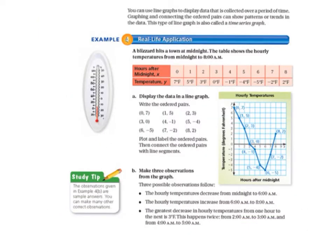On the next page, we have example 4. We're going to read the part above it first because that's important. It says you can use line graphs to display data that is collected over a period of time. Graphing and connecting the ordered pairs can show patterns or trends in the data. This type of line graph is also called a time series graph.